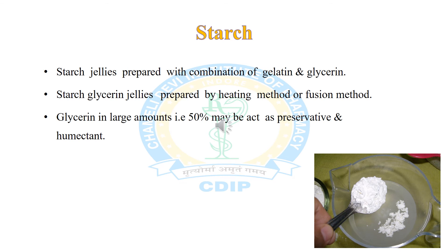Starch jellies are prepared with a combination of glycerine and gelatin using the heating or fusion method. Glycerine in a large amount — that is 50 percent — may act as a preservative and humectant. Starch mucilage prepared with water alone leads to bacterial growth, so a suitable preservative must be added.